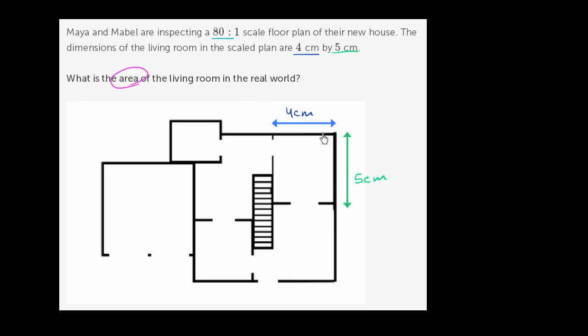This is the scaled plan and we can figure out these dimensions in the real world by looking at the scale factor. It's an 80 to 1 scale floor plan. We can assume that the house is much bigger than the floor plan. For every 80 units in the house, that represents one unit on the floor plan.